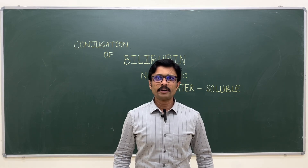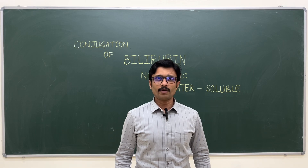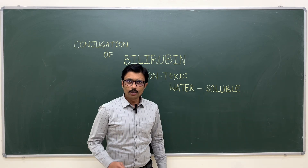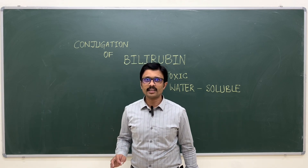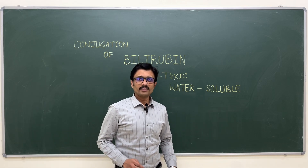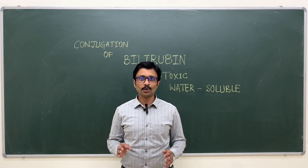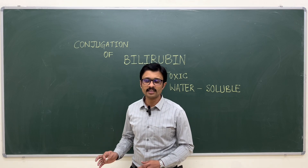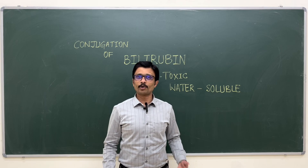Hi, welcome back. In the previous lecture, I explained how bilirubin is formed from the breakdown of heme within the spleen macrophages. The bilirubin that is formed is unconjugated bilirubin — it is highly toxic and lipid soluble, or water insoluble. So now in this lecture, I will be explaining how this unconjugated, highly toxic bilirubin is handled by the liver cells to detoxify it and how it is excreted from our body.